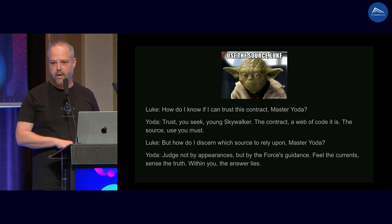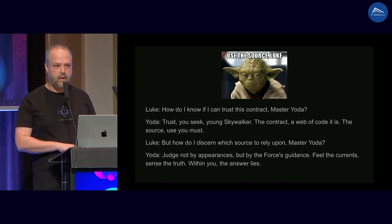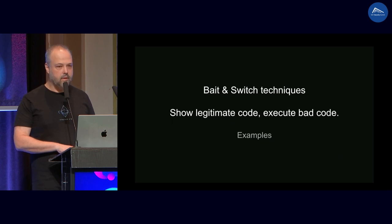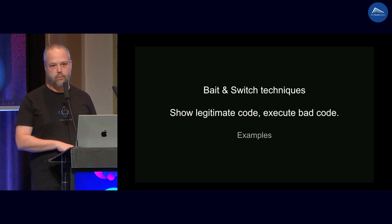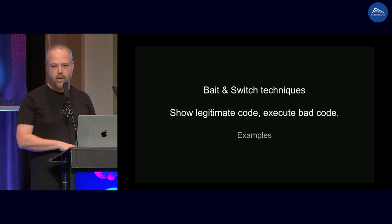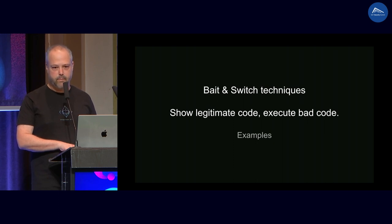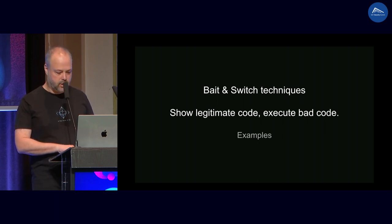It turns out they can pull this rug from under us, and they often do. We're going to show a couple of techniques used to bait and switch — to show you legitimate code but actually run something else. Then we're going to show an actual vulnerability that was exploited on mainnet and was missed by auditors due to such techniques.